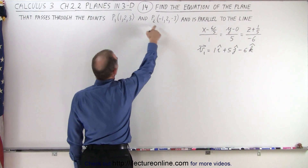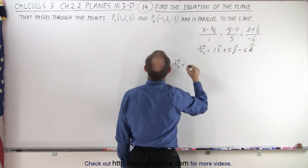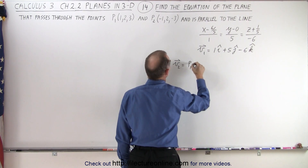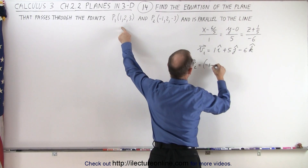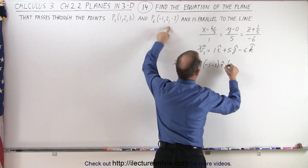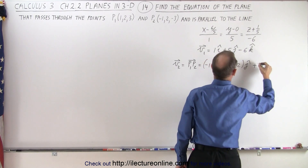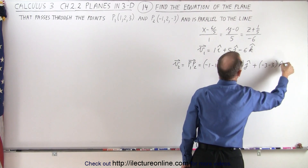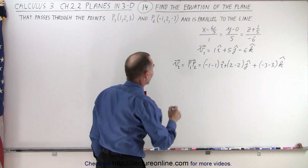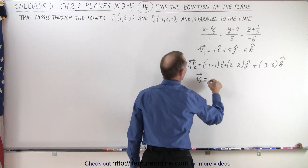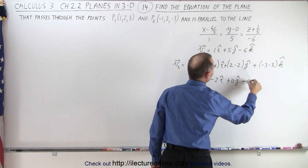Now we need a vector that connects these two points. We'll call that Vector 2. Vector 2 is equal to the vector from point 1 to point 2, which is found by taking negative 1 minus 1 in the i direction, plus 2 minus 2 in the j direction, and plus negative 3 minus 3 in the k direction. The middle term drops out — 2 minus 2 is 0 — so Vector 2 equals negative 2 in i, plus 0 in j, minus 6 in k.